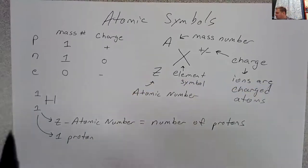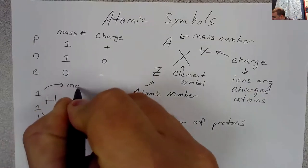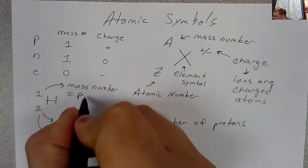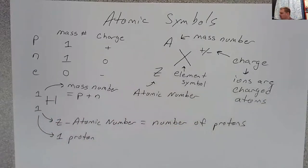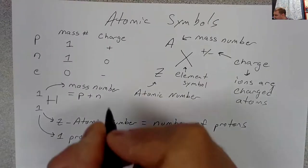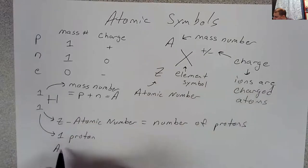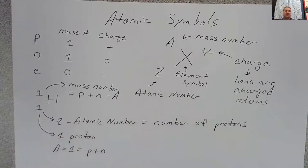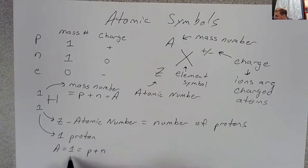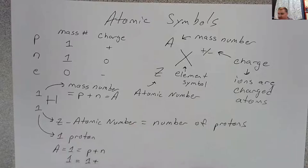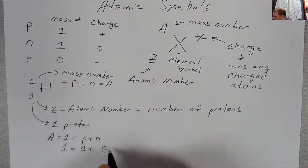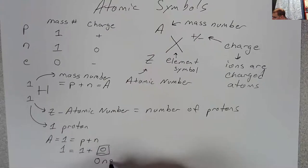The one up top would be the mass number of the whole atom, and the mass number is equal to the number of protons plus the number of neutrons. If we already have one proton and the mass number is one — so A equals one, which equals protons plus neutrons — we already know that this hydrogen atom has one proton, so one equals one plus zero, meaning there are zero neutrons in this atom of hydrogen.